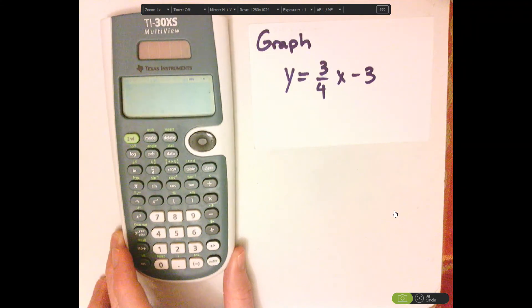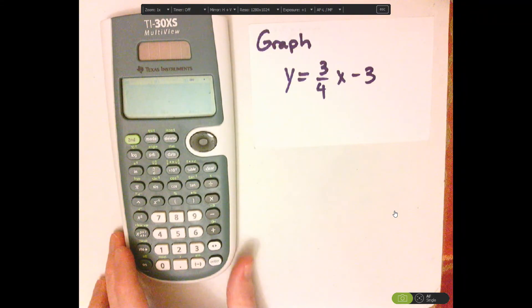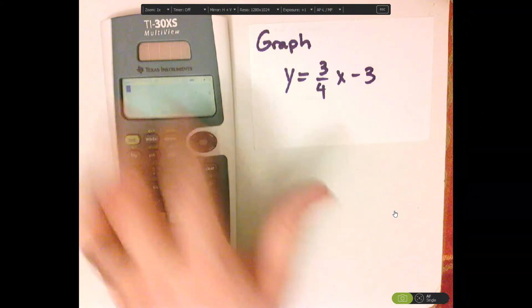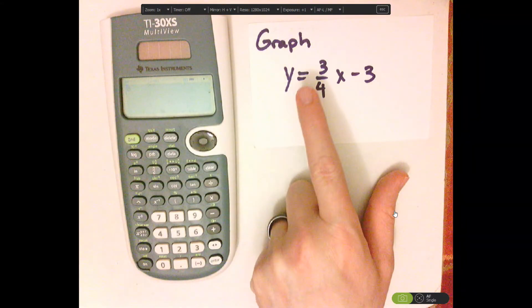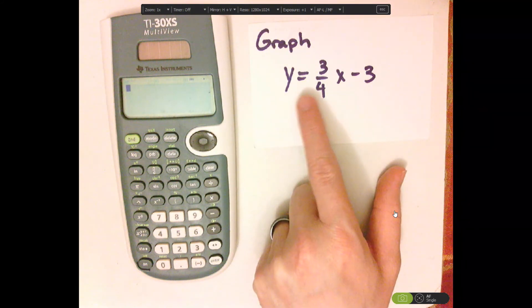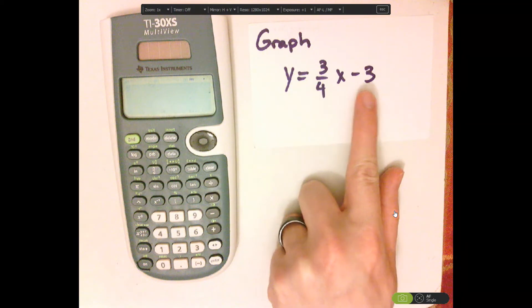Hi, I'm JD, and what we're going to be doing today is we're going to be using the TI-30XS MultiView Calculator to help us with graphing. Alright, so we have Y equals 3 fourths X minus 3.